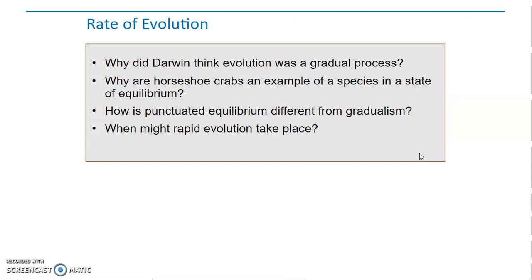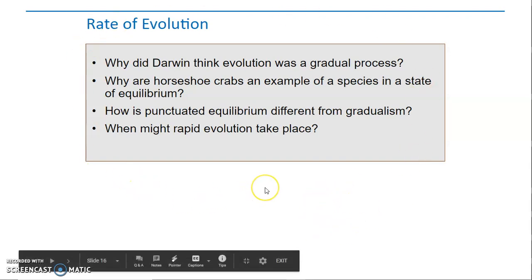And then when might rapid evolution take place? Well, when there is a major pressure on the organisms. We've talked about how evolution requires pressure, which is why humans really aren't evolving. And it also requires the strongest to survive - another reason humans are not evolving. So these are the kind of questions you should be able to answer.